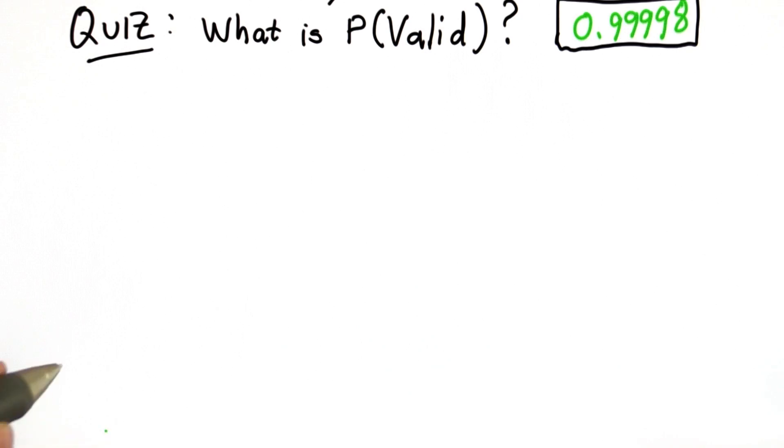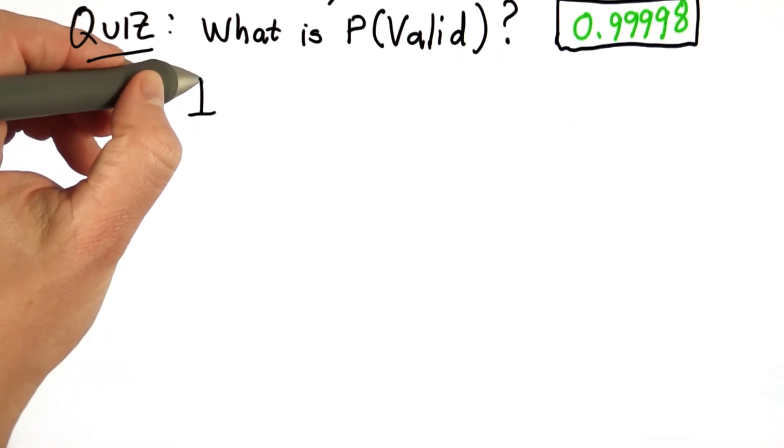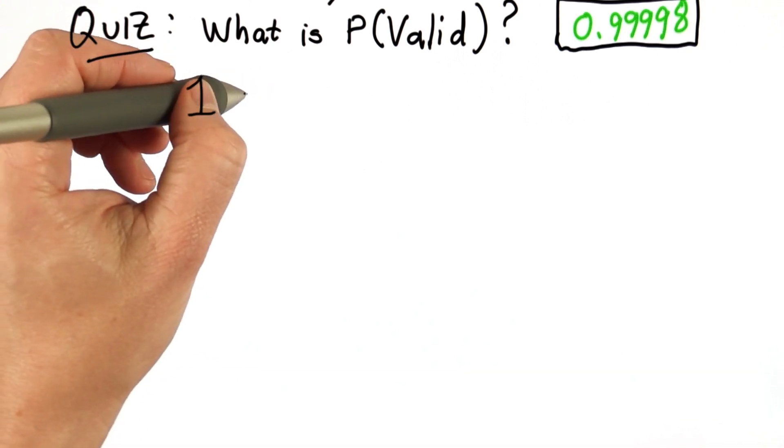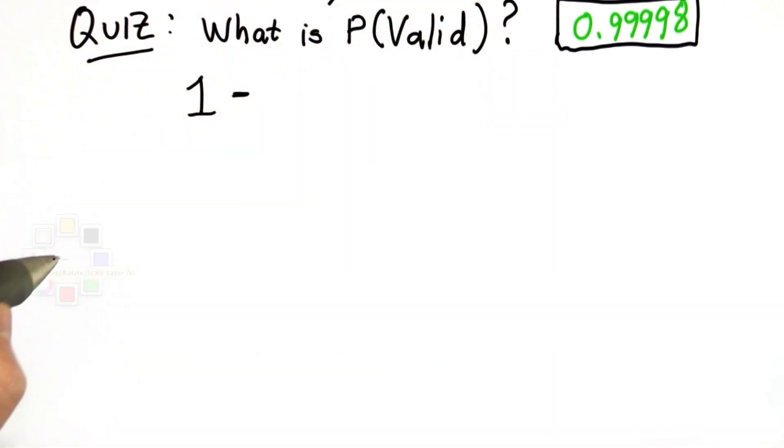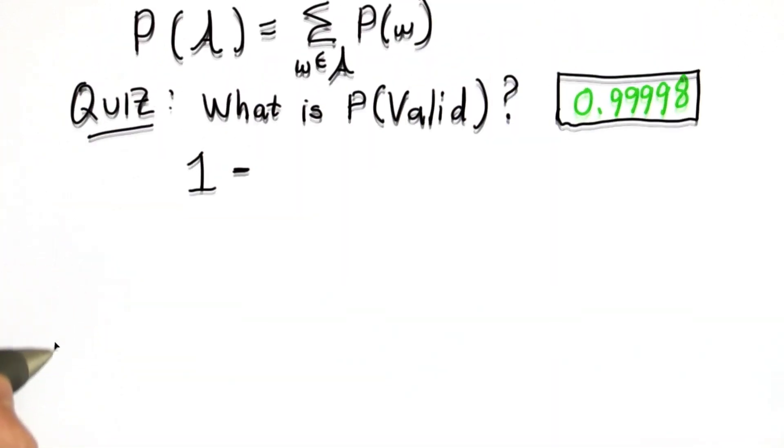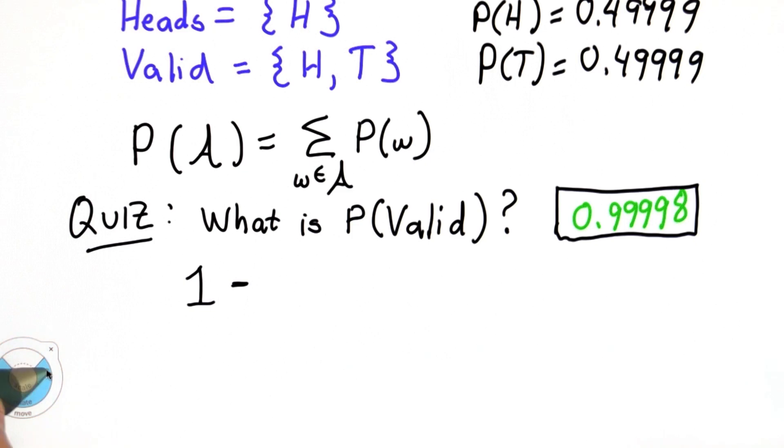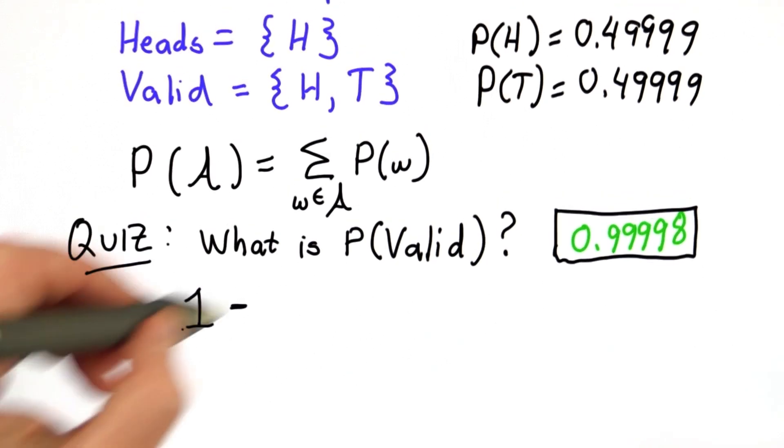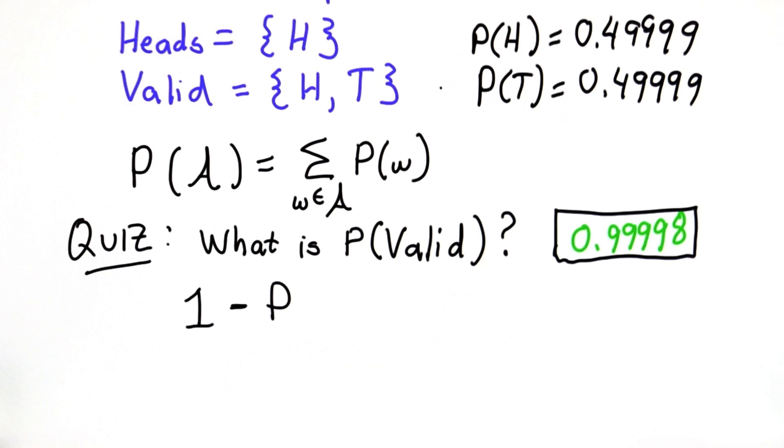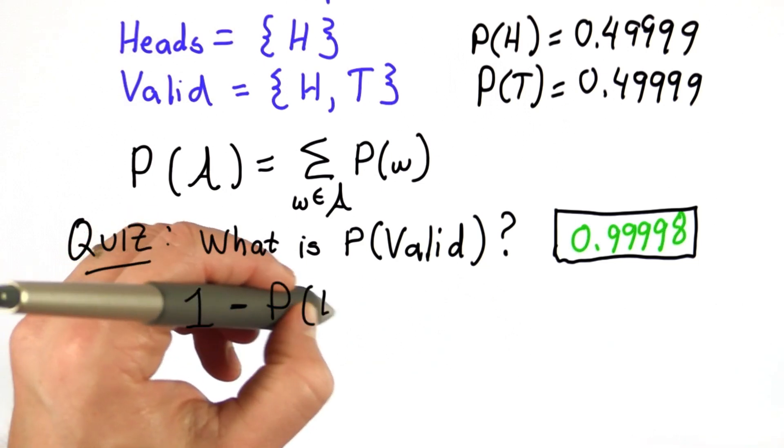And that property is that we know the sum of all possible events has to be 1. So instead of computing P valid by adding the probabilities of heads and tails, we can compute it by subtracting from 1 the probability of the events not in valid, which is the probability of e.